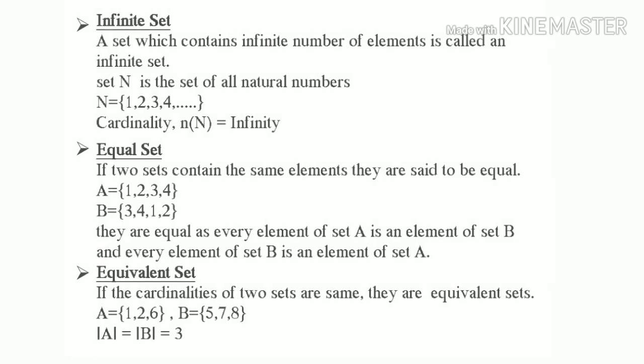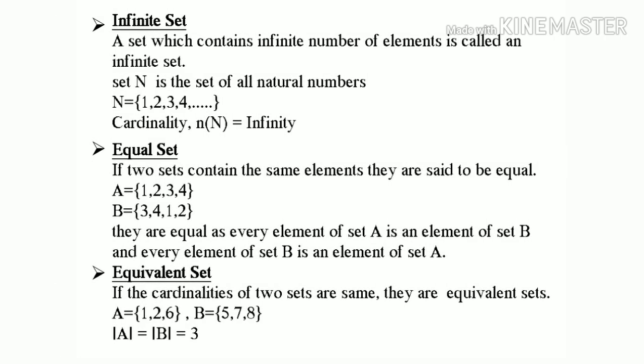Next one is infinite set. A set which contains infinite number of elements is called an infinite set. Set N is the set of all natural numbers. N equal to {1, 2, 3, 4, ...}. Cardinality n of N equal to infinity.